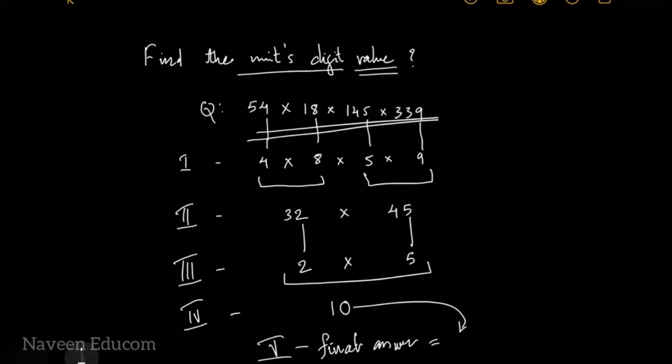You have to write the unit digit of the last obtained number, that is 0. So the final answer is 0.